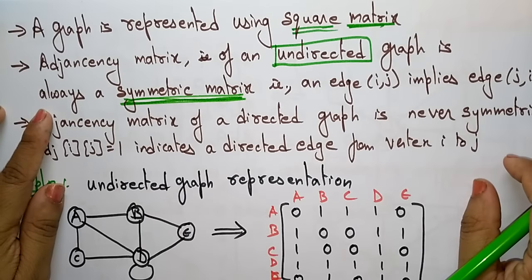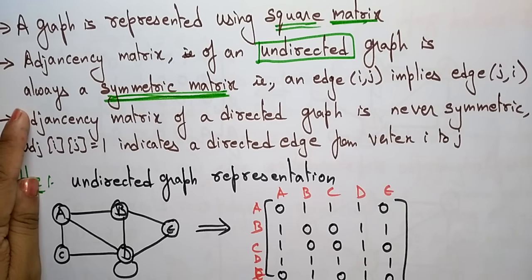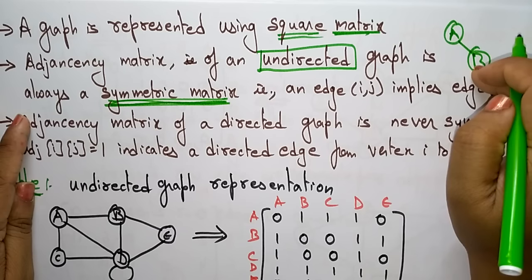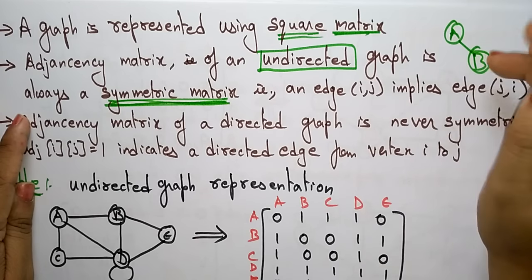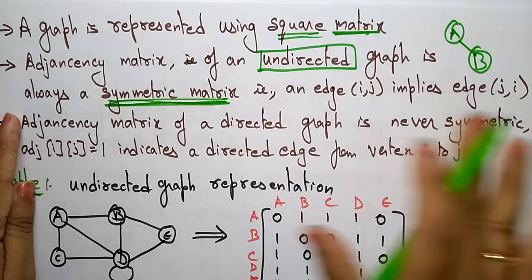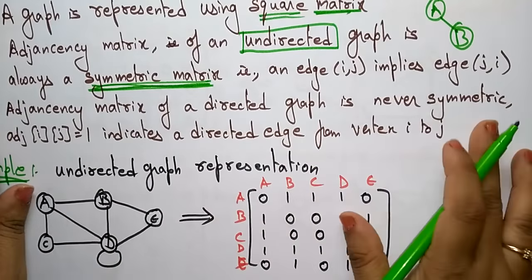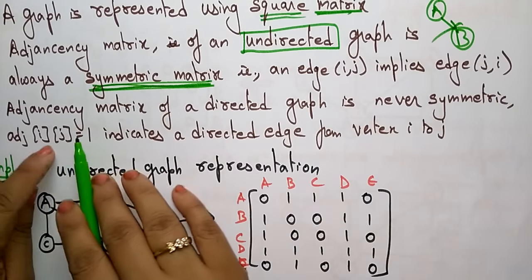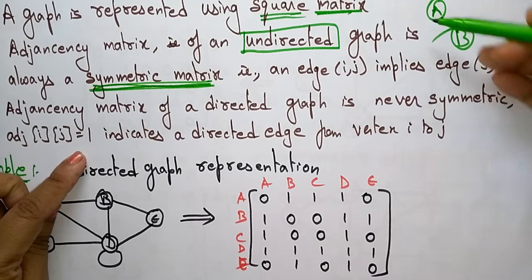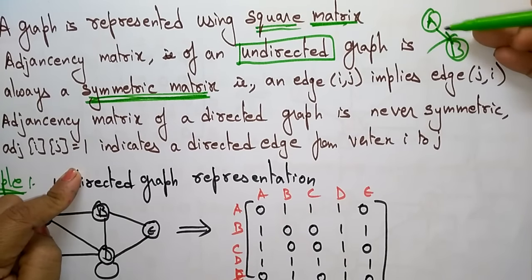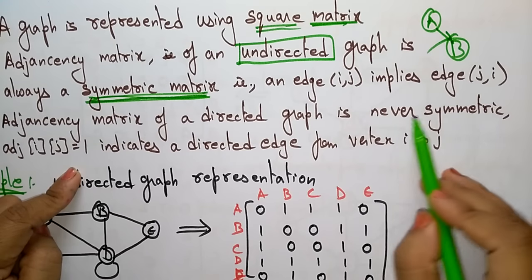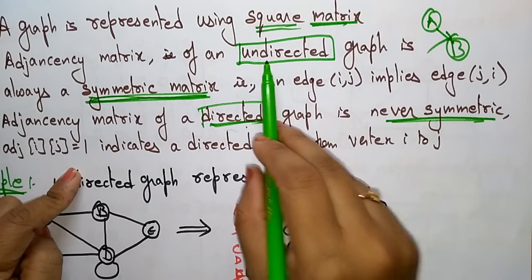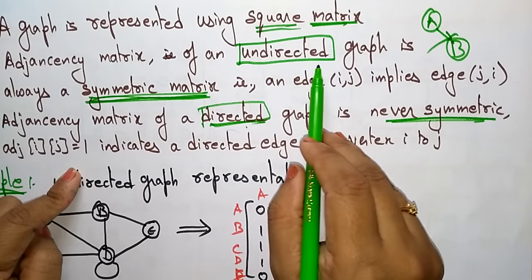In an undirected graph, edge (i,j) implies edge (j,i), meaning edge a,b equals edge b,a. Whenever it is undirected, you call it a symmetric matrix. However, the adjacency matrix of a directed graph is never symmetric, because adjacent[i][j] = 1 indicates a direct edge from i to j, but there is no edge from j to i. In the case of a directed graph it is always not symmetric, whereas in an undirected graph with no directions it is always symmetric.